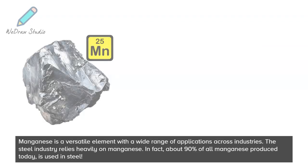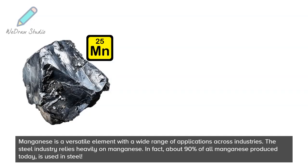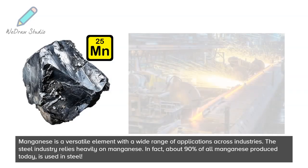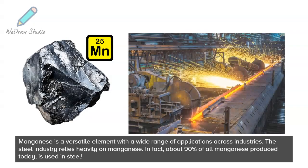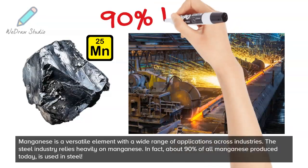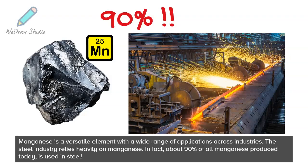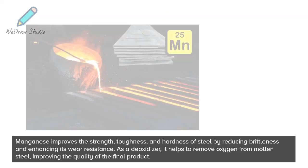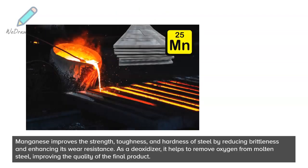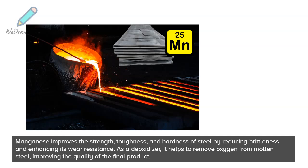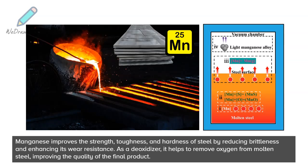Manganese is a versatile element with a wide range of applications across industries. The steel industry relies heavily on manganese. In fact, about 90% of all manganese produced today is used in steel. Manganese improves the strength, toughness, and hardness of steel by reducing brittleness and enhancing its wear resistance. As a deoxidizer, it helps to remove oxygen from molten steel, improving the quality of the final product.